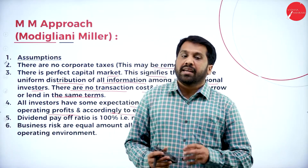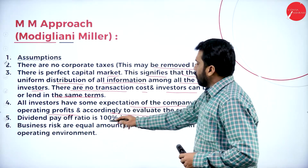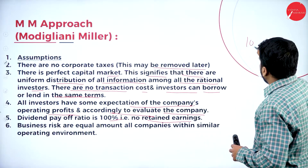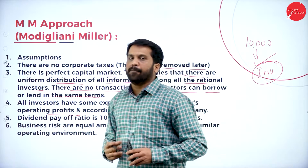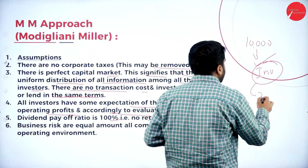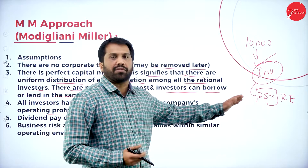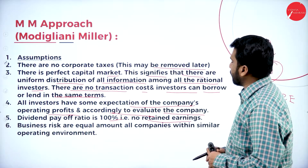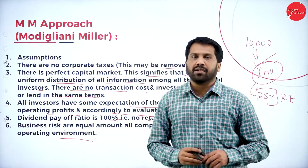All investors have the same expectation of the company's operating profit and evaluate the company accordingly. Whatever operating profit is earned by the company, some part will go to the investors. The dividend payout ratio is always 100% — there is no retained earning. For example, if the company earns a profit of 10,000, all 10,000 goes to shareholders. Some companies keep 25% as retained earnings (savings) and distribute 75% to investors, but under MM, payout is 100%. Also, business risk is equal for all companies within a similar operating environment.